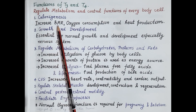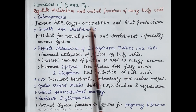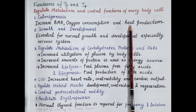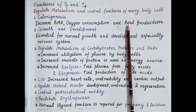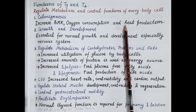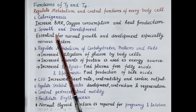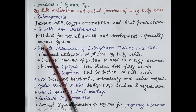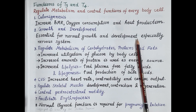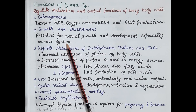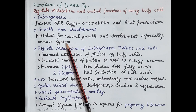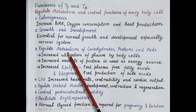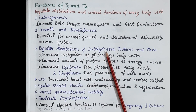T3 and T4 increase basal metabolic rate, thereby increasing oxygen consumption and heat production. Since these hormones control heat production, they regulate body temperature. The second important function of T3 and T4 is growth and development — they are essential for normal growth, especially development of the nervous system. Deficiency of T3 and T4 produces mental retardation in infants and children, while in adults their deficiency leads to impairment of intelligence. T3 and T4 also regulate metabolism of carbohydrates, proteins, and fats.